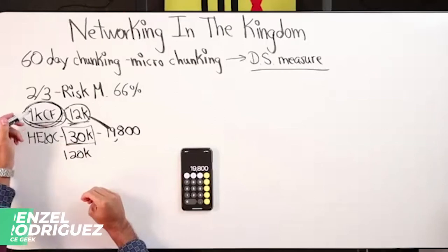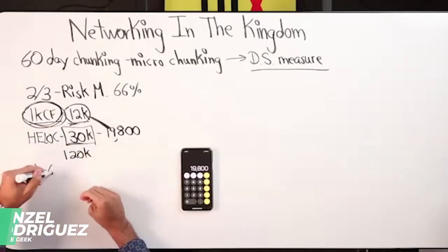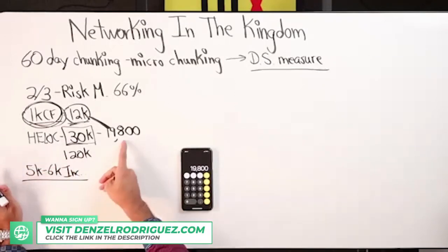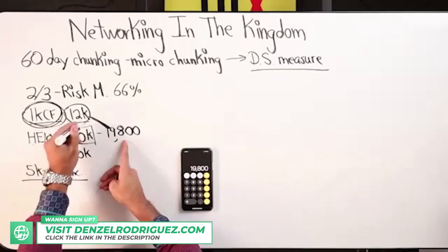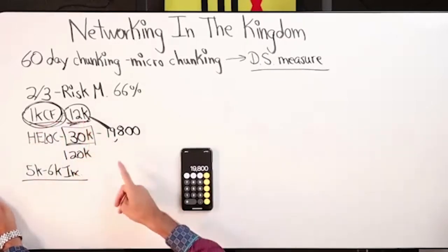We got a thousand a month in cash flow, maybe they're bringing in 5K to 6K in income per month, and they do a 19,800 chunk with only 12,000 in cash flow. That is too risky in my opinion.